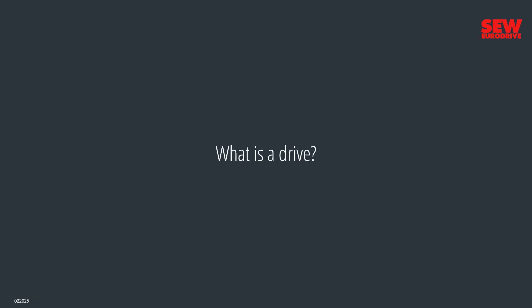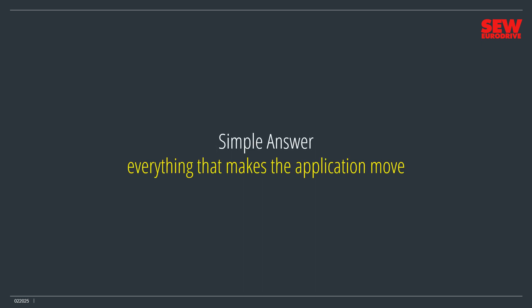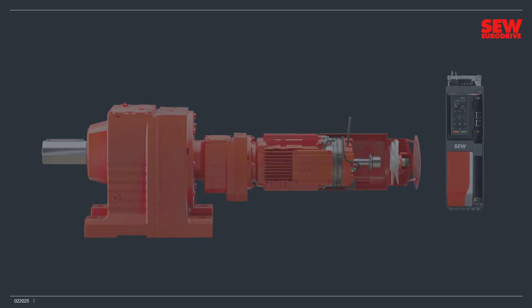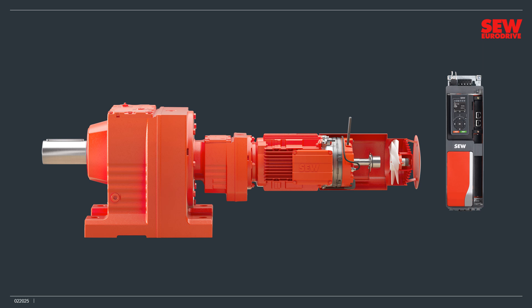What exactly is a drive? The simple answer is that it's everything that makes the application move. Without motion, we wouldn't have industry, so drives are pretty important. Here's an example drive. It's quite well equipped and shows nearly every accessory available. Most drives come with a gearbox that fits between the application and the electric motor that supplies the power. The gearbox changes the motor's speed and torque to what the application needs – usually lowering the speed and increasing the torque.